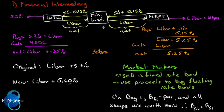Now that we've introduced the financial institution, let's talk about market makers. In this example the financial institution enters into one swap agreement with Microsoft and another with Intel. Microsoft and Intel may not even know the other is doing business with this institution, let alone that they are the offsetting trade on these two swaps. So the financial institution must be prepared to act as a market maker.